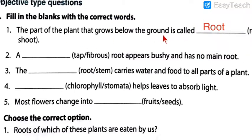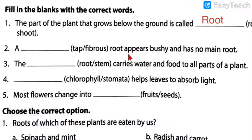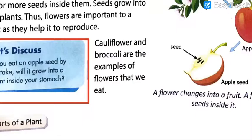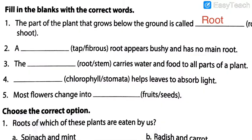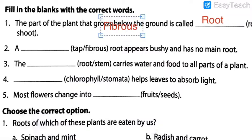Next question: A dash root appears bushy and has no main root. Which root appears bushy and does not have any main root? Looking at the diagram — tap root has one main root, whereas fibrous root has no main root and it appears very bushy. So obviously the answer is fibrous root.